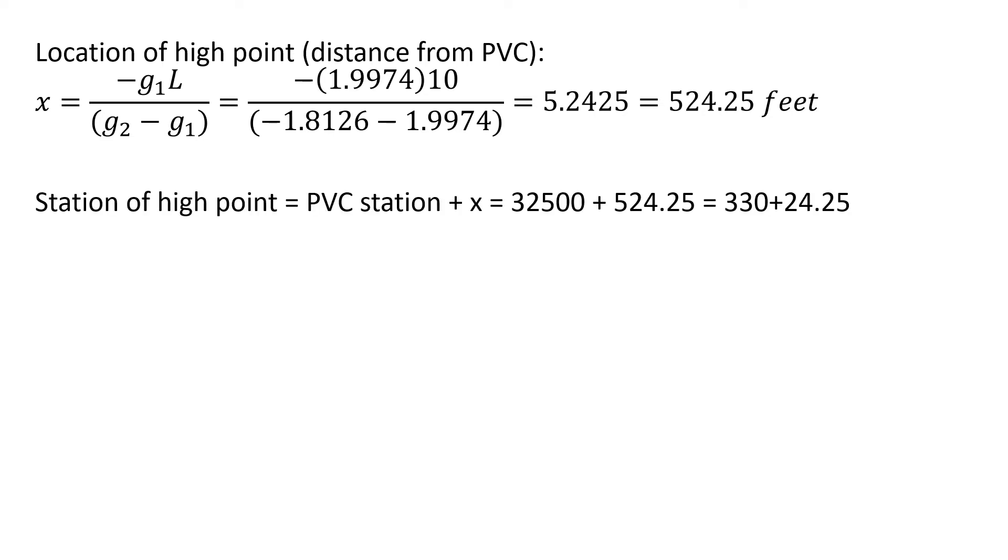The station of this high point is the PVC station plus X. So station 325 plus 524.25 feet gives us a station of the high point of 330+24.25. So it's really close to the PVI just on the other side of the PVI from the PVC.